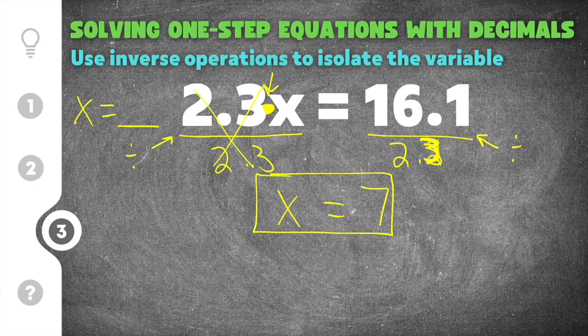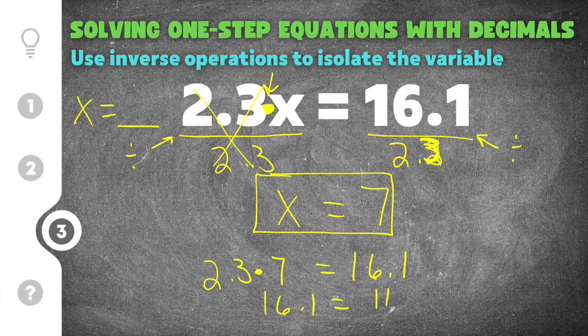And then again, if you want to double check your answer, you can say 2.3 times our solution, which is 7, equals 16.1. Well, when you simplify that, you get 16.1 equals 16.1. And that is a true statement, which means 7 is the correct solution.